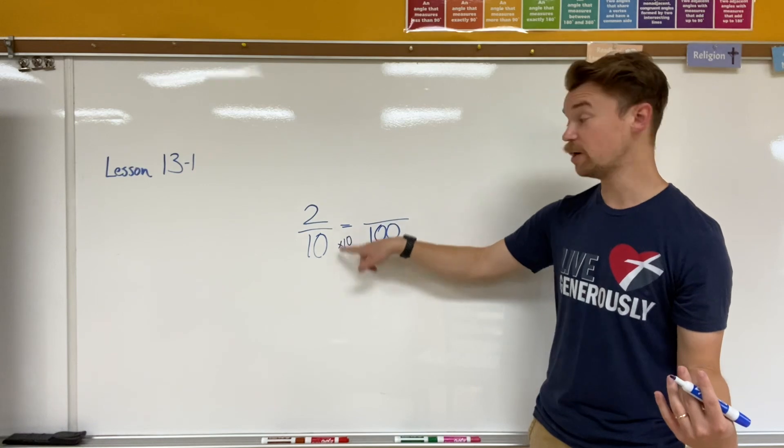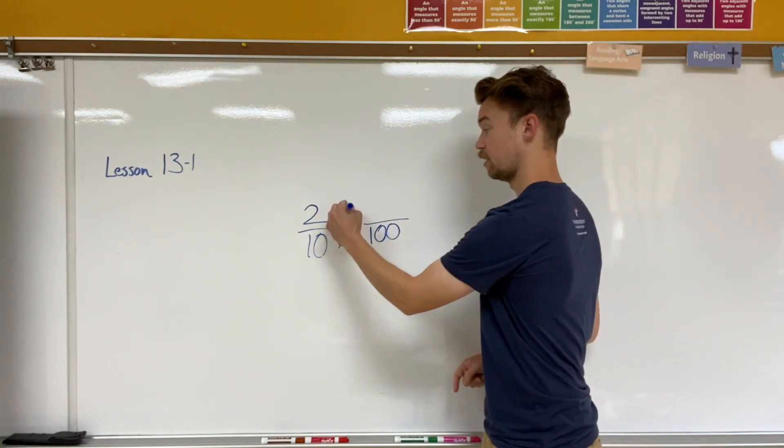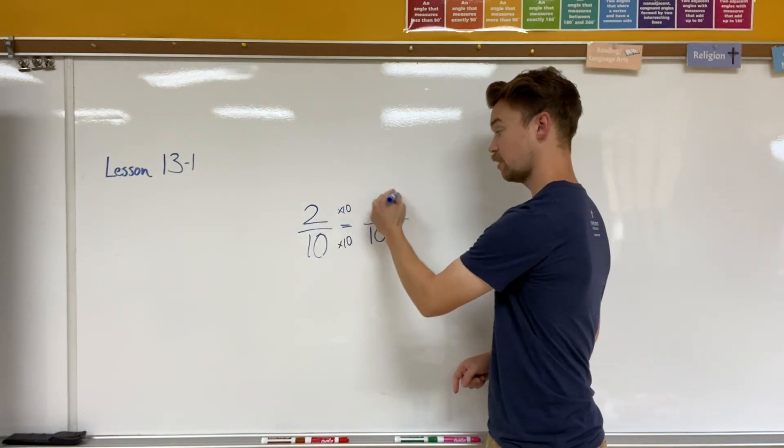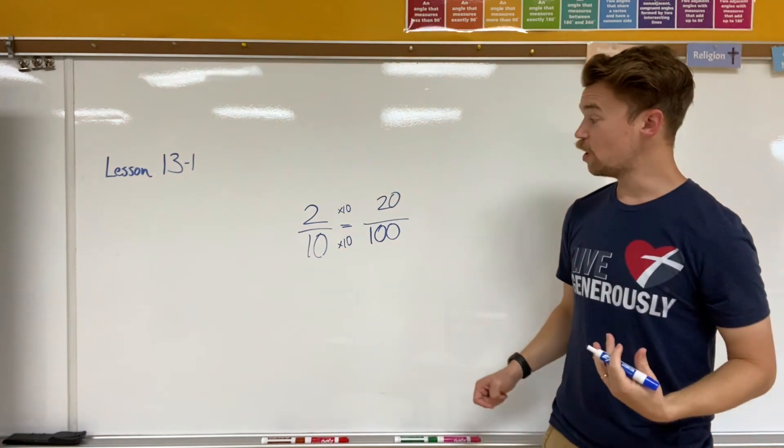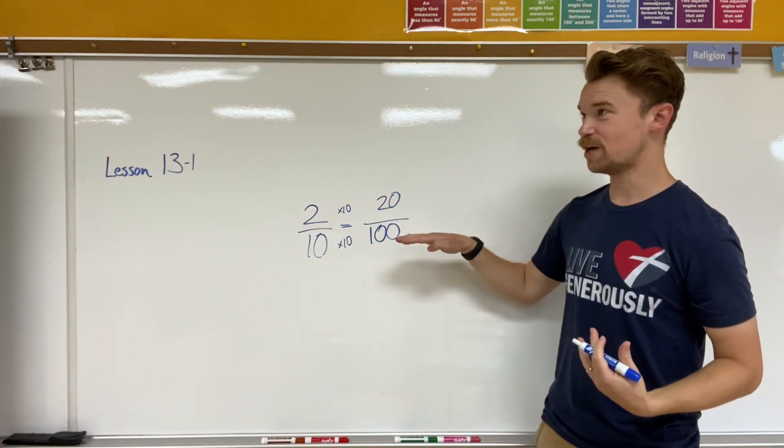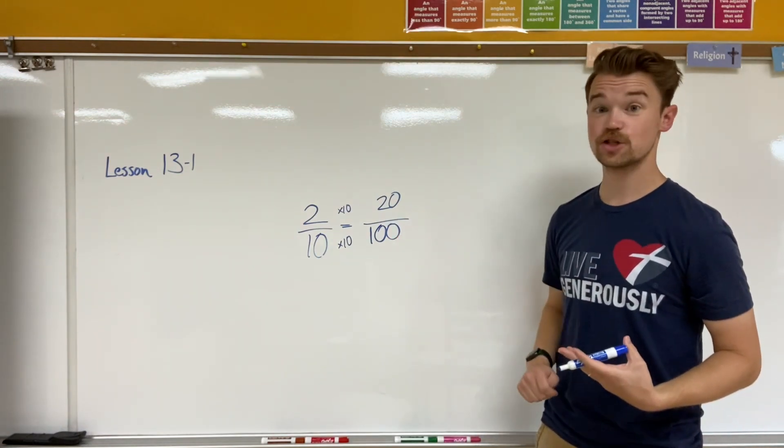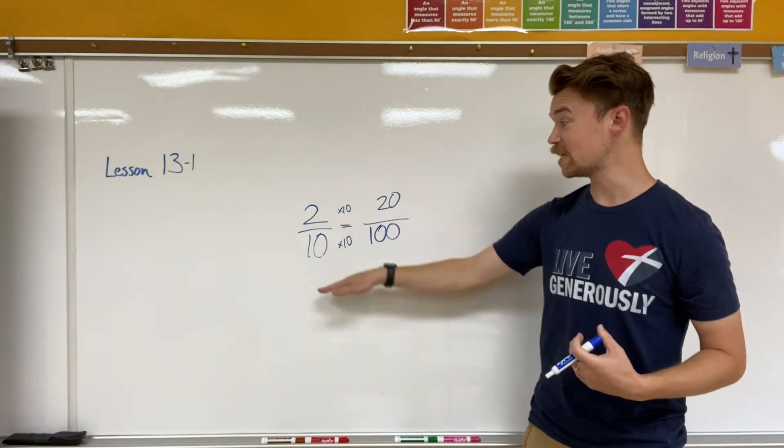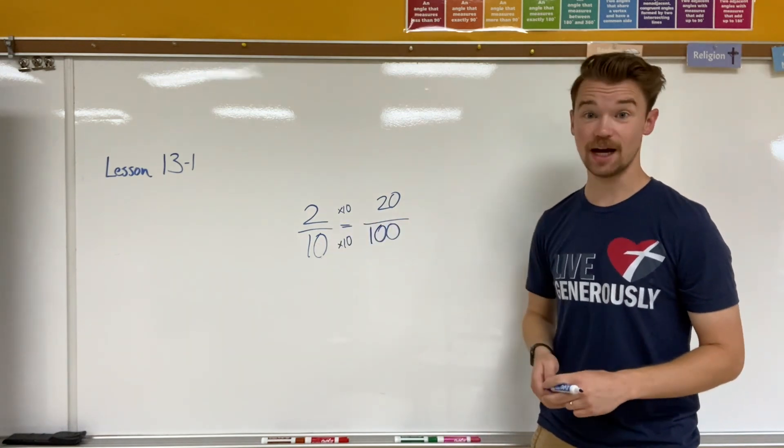So whatever I do to the denominator, I also have to do to the numerator. Two times ten is twenty. So the fraction that is equivalent to two tenths is twenty hundredths.